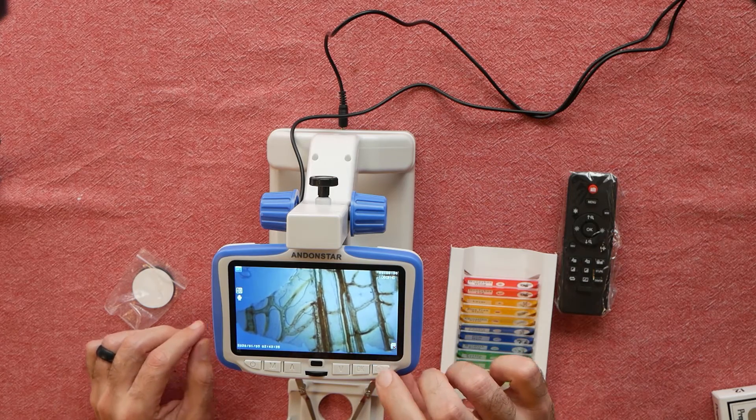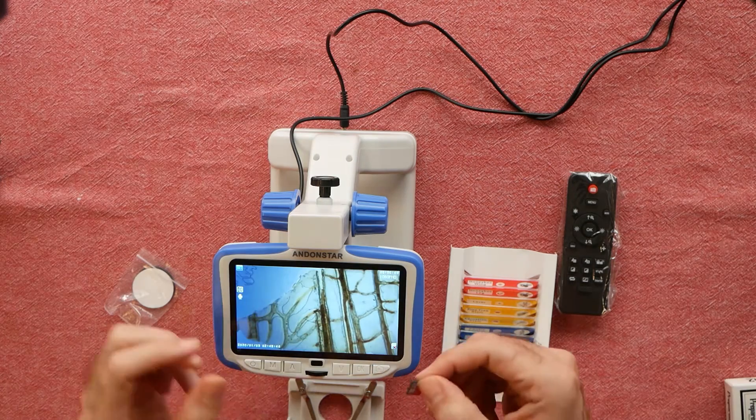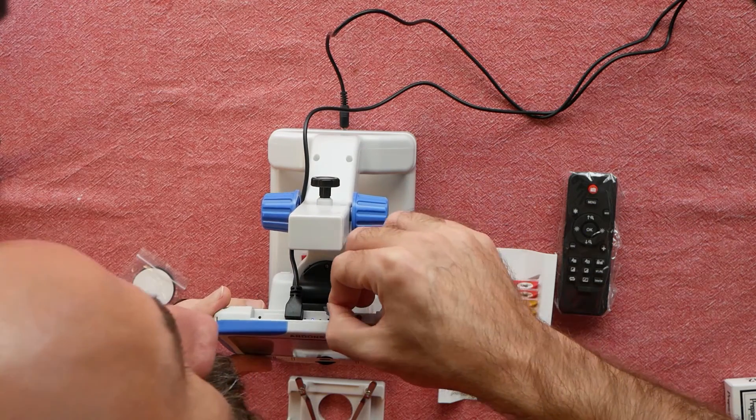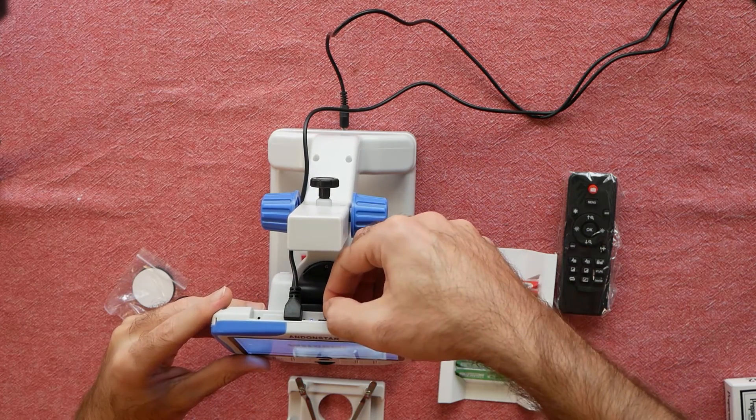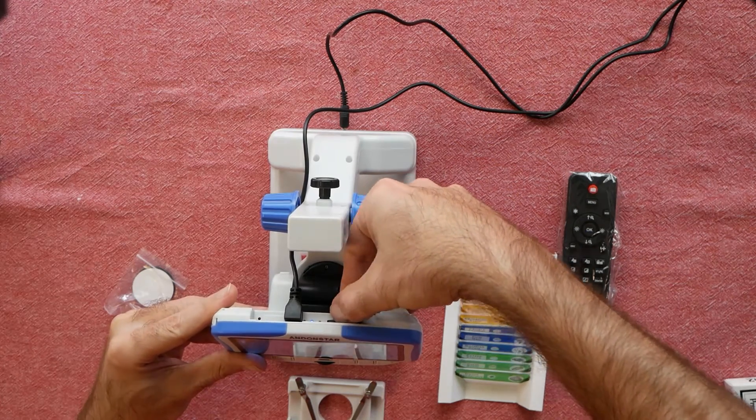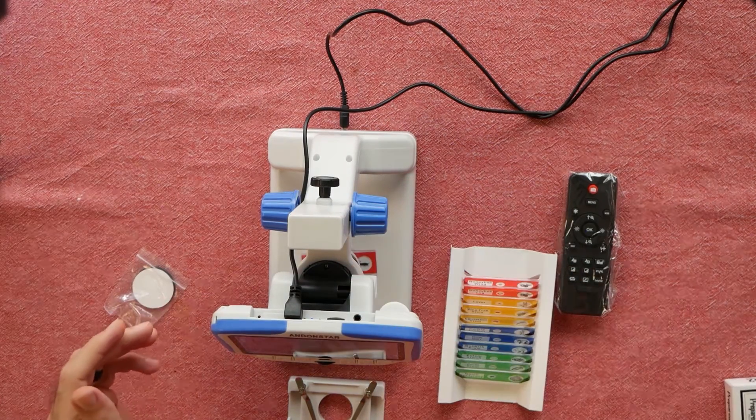Now as I try to snap a photo, notice it's not able to capture a picture. That's because you need to insert a microSD card, which is not included with the microscope. It can take up to a 64GB SD card, and fortunately, we have an SD card reader built into our laptop, which makes it super easy to transfer pictures.